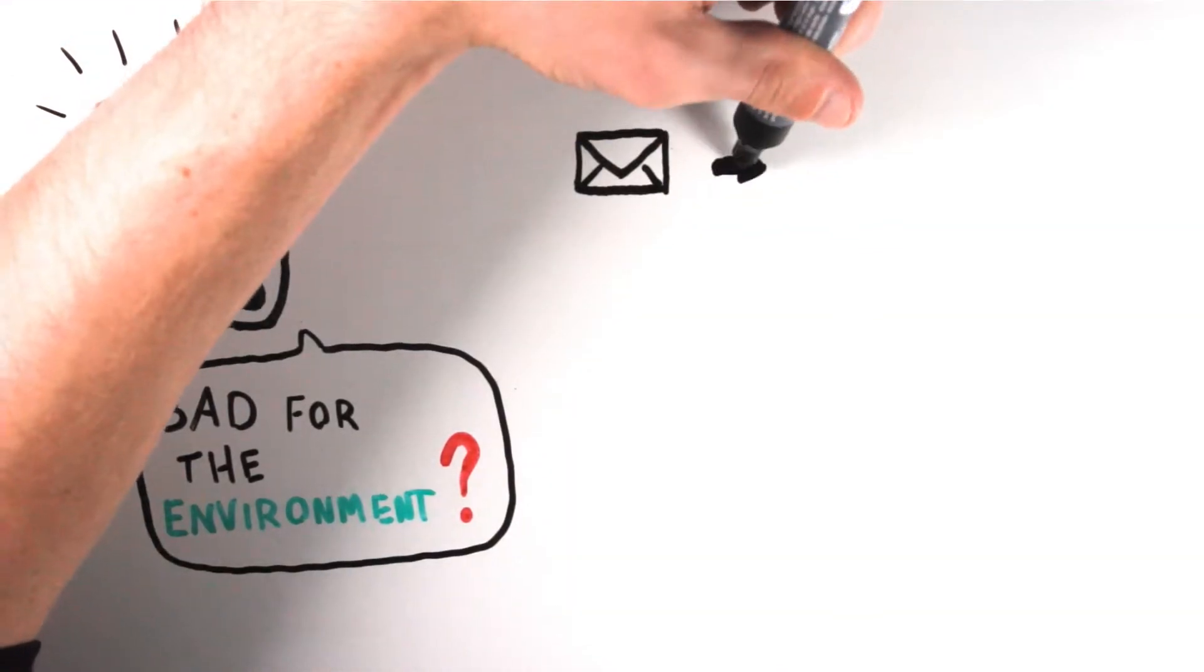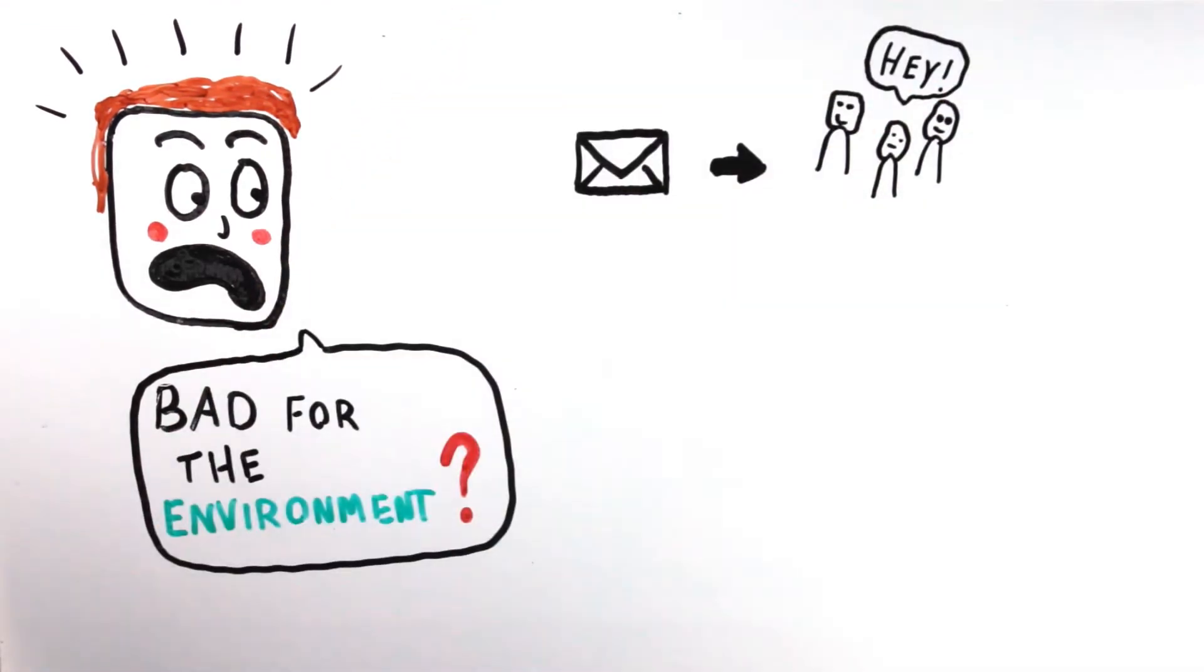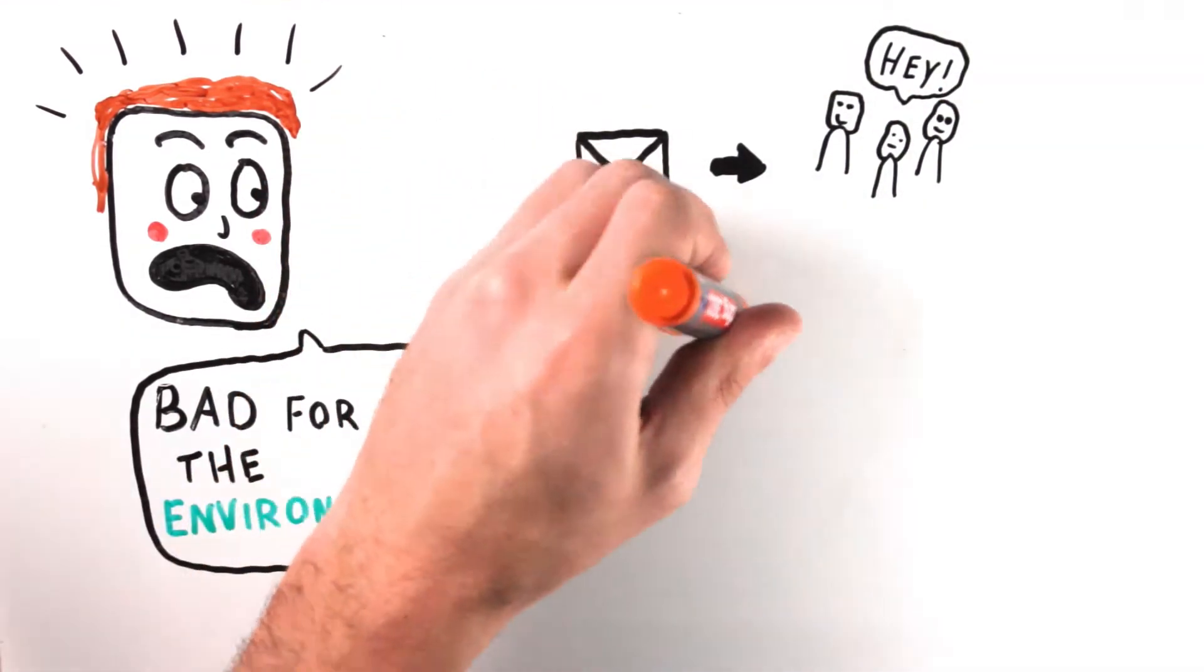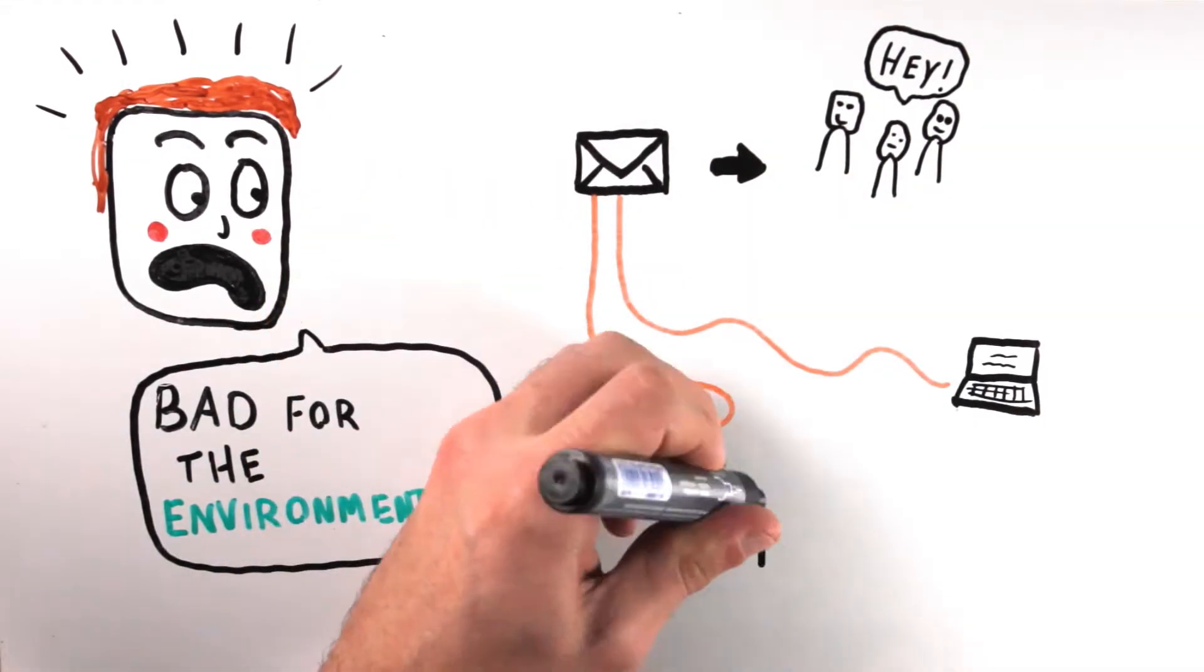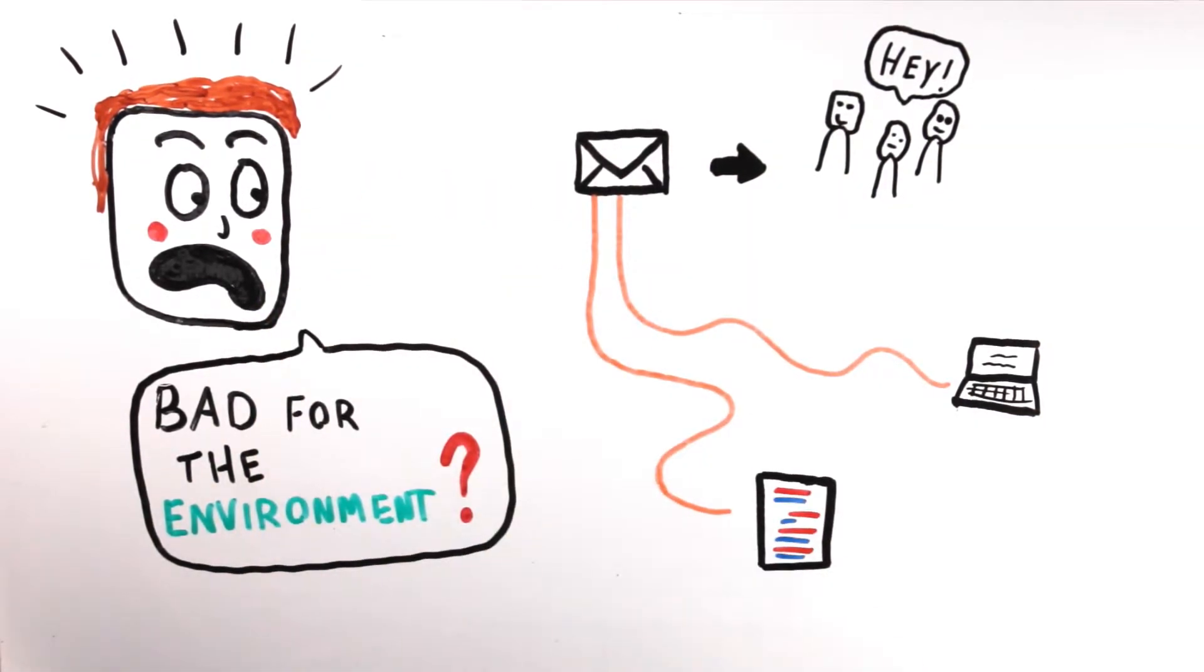The same applies to normal emails sent to colleagues or friends. The infrastructure behind an email has not only to do with the energy you use for your computer but also needs energy to store and transmit all these emails in data centers.